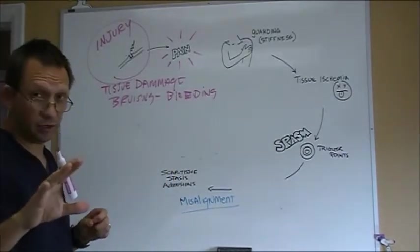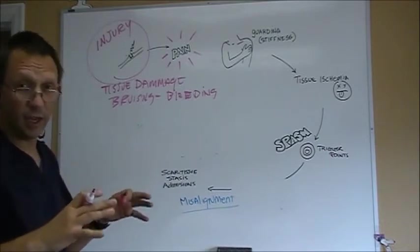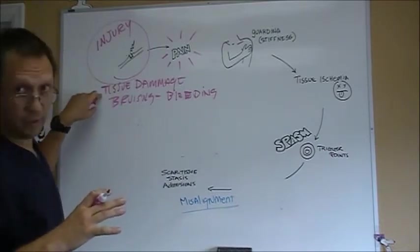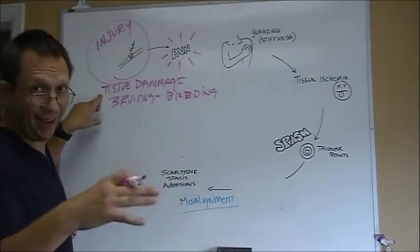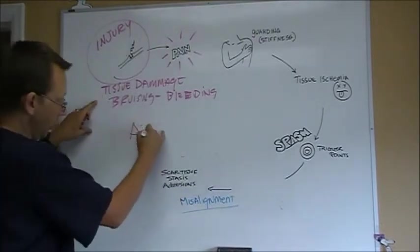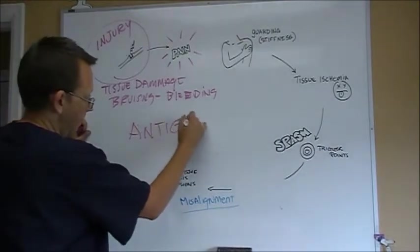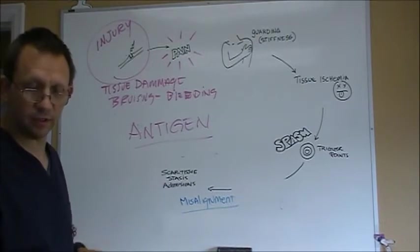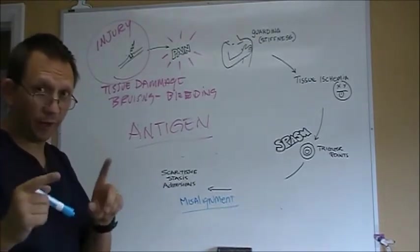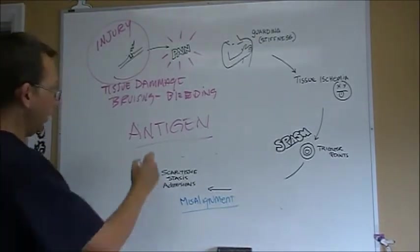So what this does cause is a reaction with the tissue damage. There's bits of cells that should be on the insides of cells on the outside. That acts as what's called an antigen, which is the bad guy. Not a bad guy. It just means that there's something there that shouldn't be there.